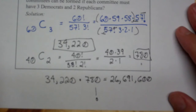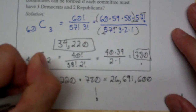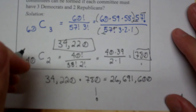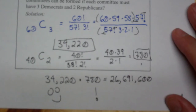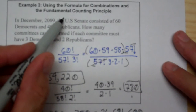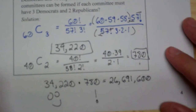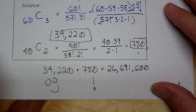This concludes our ability to use combinations and permutations and understand the difference. It also allows us to understand when we're going to use the fundamental counting principle in some of these problems. Now you can go on to the next section.